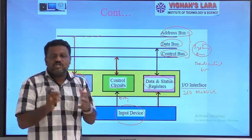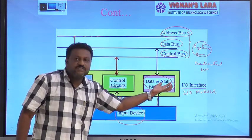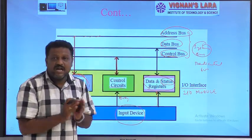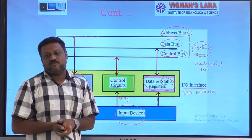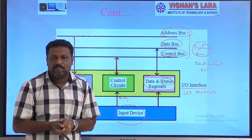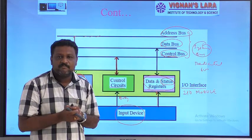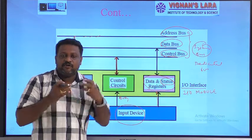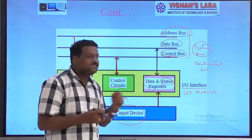The commands the CPU issues are handled by the status register. This register does not act only as a status register — it can also act as a control register, collecting commands from the CPU via the data bus and behaving accordingly. Once it receives commands, those commands are stored in the status register.